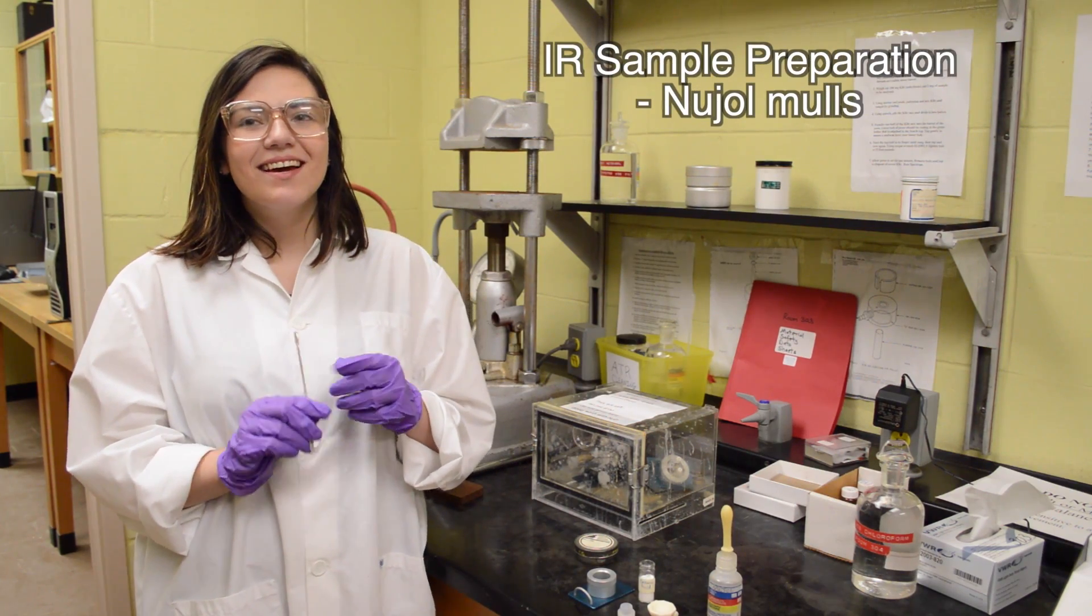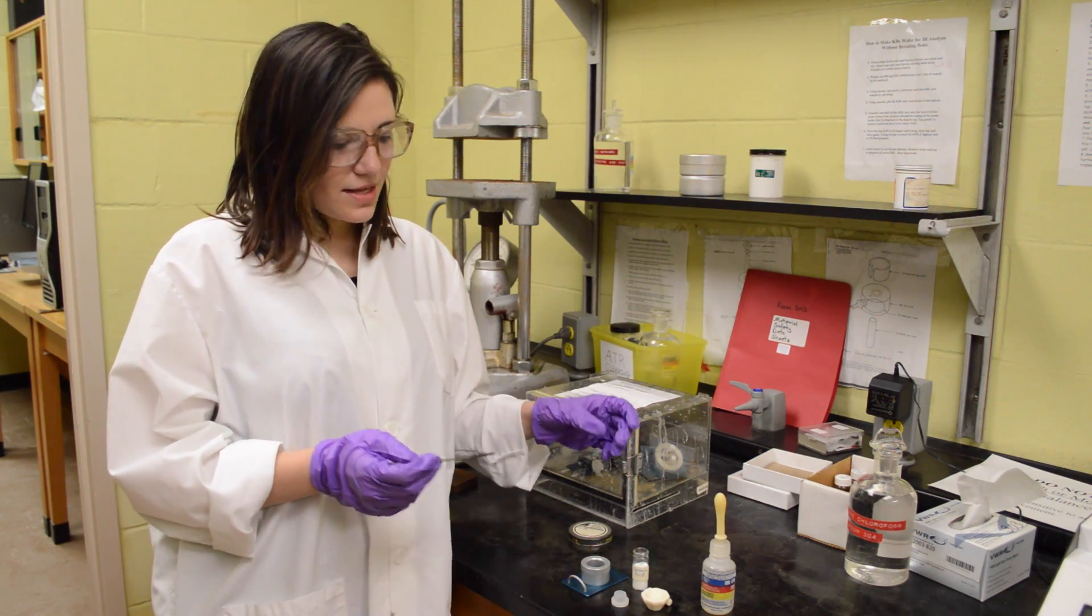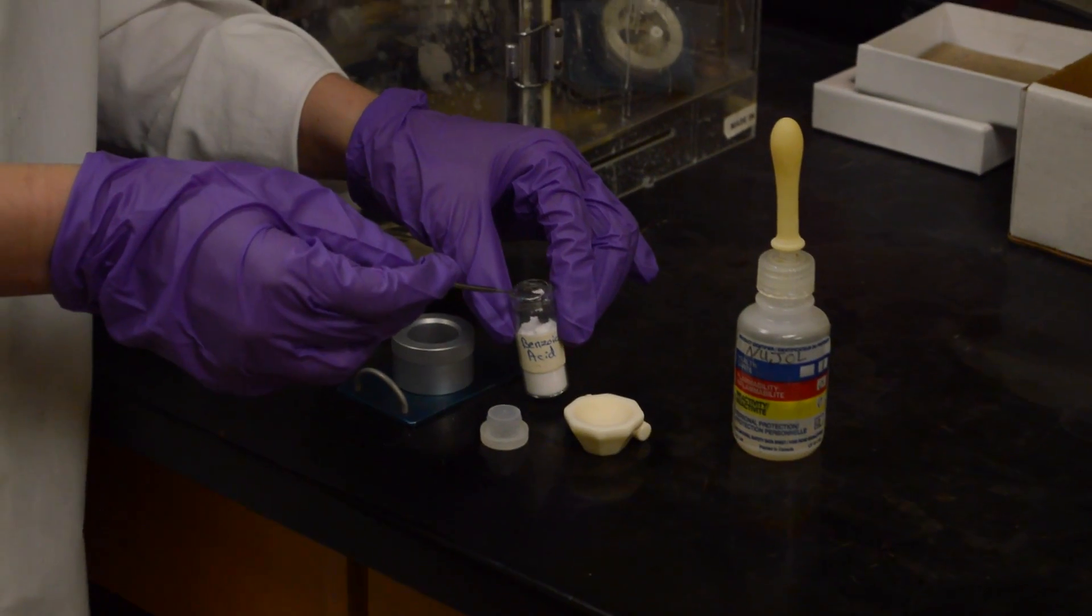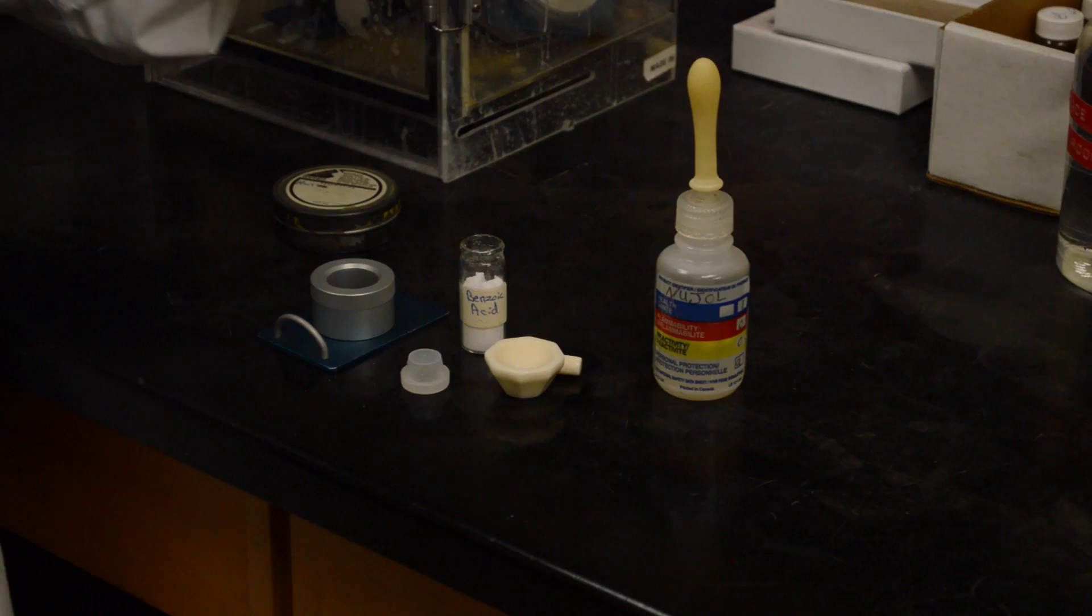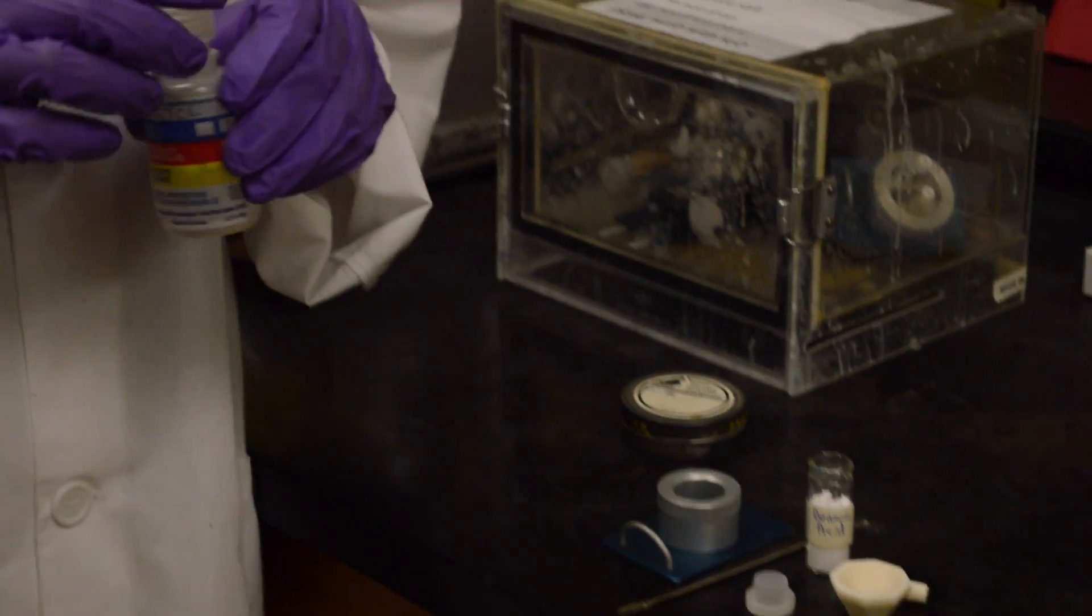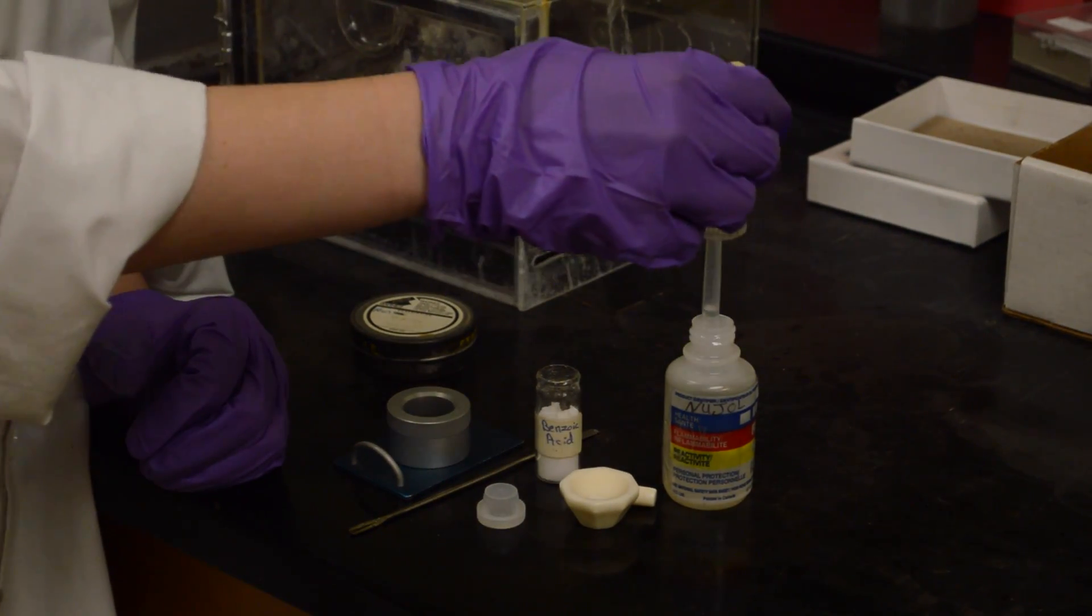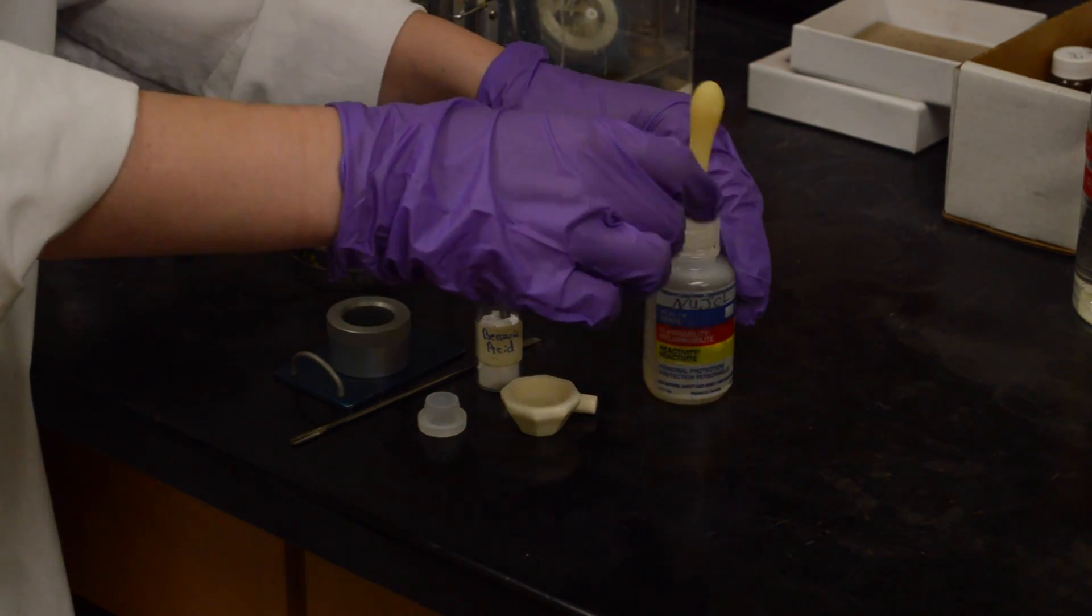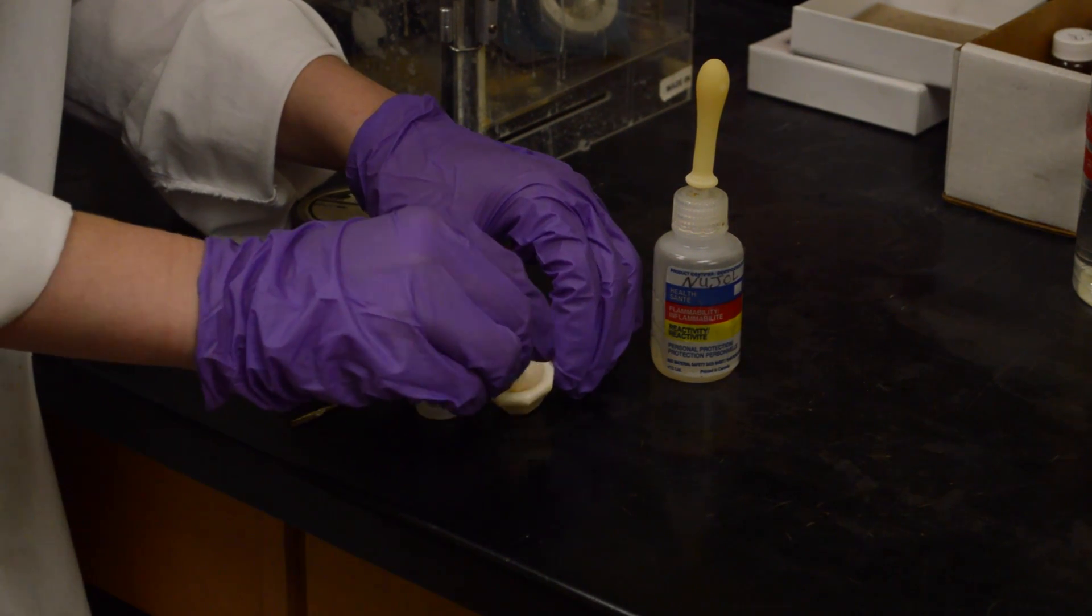I'm going to show you guys how to use the salt plates for IR on the machine that you were shown. If you have a solid sample, you're going to want to take a small amount from your sample vial and place it inside this tiny mortar and pestle like so. You want to make a paste with Nujol which acts as the background. Just take a couple of drops and place them right inside, and then mix it together.